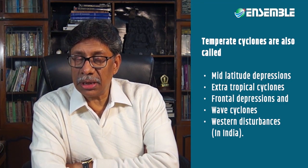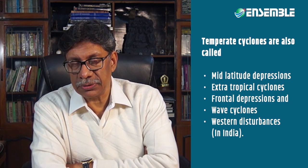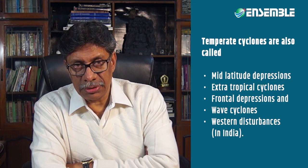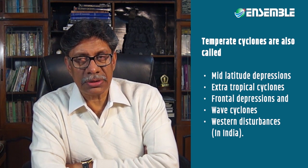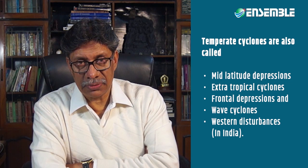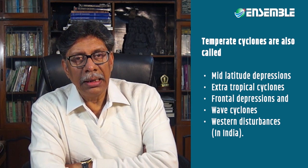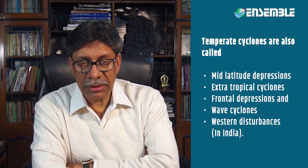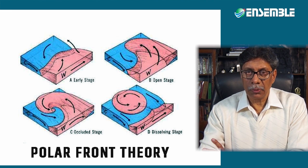Temperate cyclones are also called middle latitude depressions — because they occur in middle latitudes around 45 degrees — extra-tropical cyclones, because they are away from the tropical region; frontal depressions, because they generate themselves from fronts; and wave cyclones. In India, these temperate cyclones are called western disturbances.